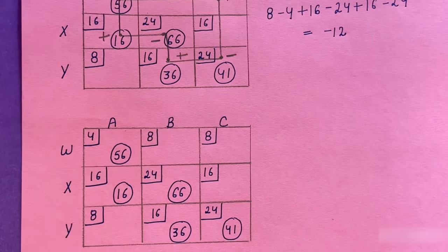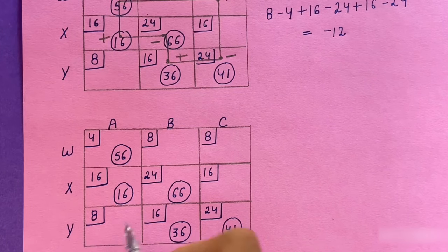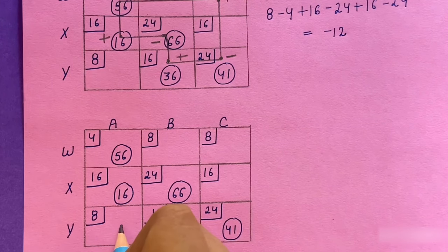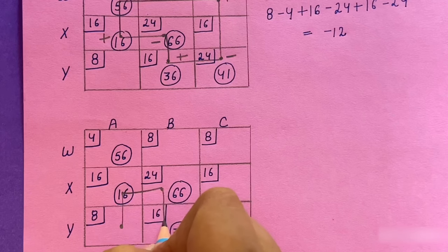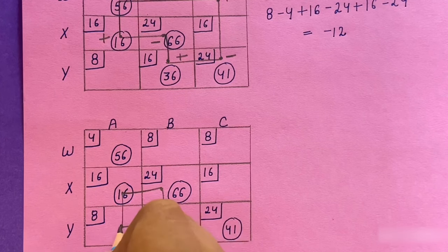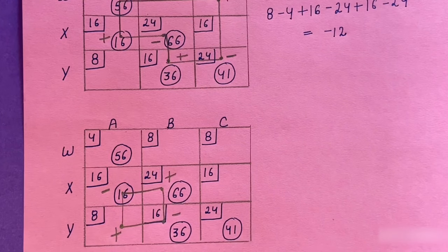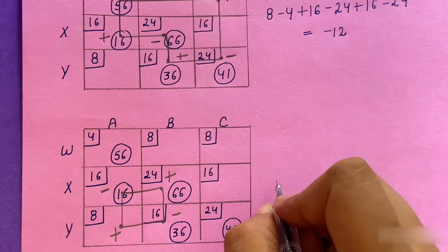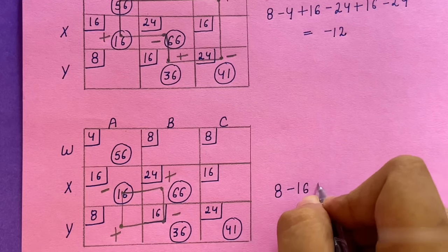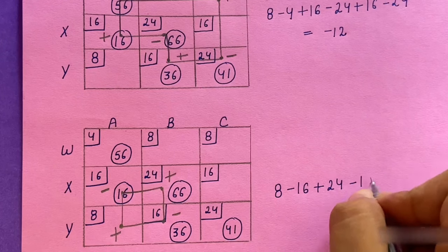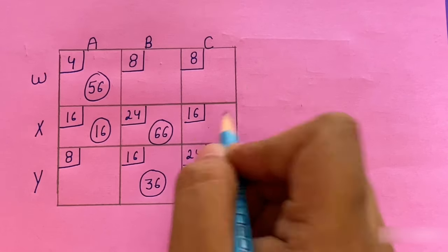For the YA cell, we trace the closed path and assign signs alternately. The improvement index = 8 − 16 + 24 − 16 = 0. Next, for the XC cell, we trace its closed path.